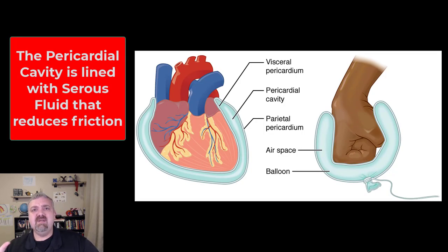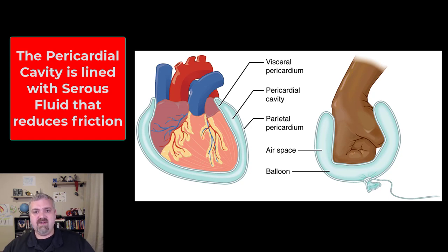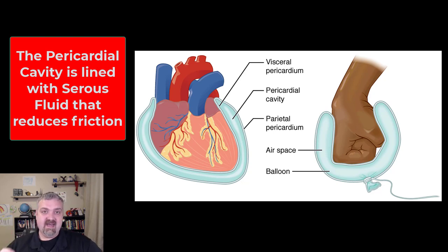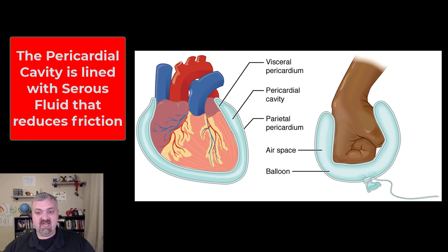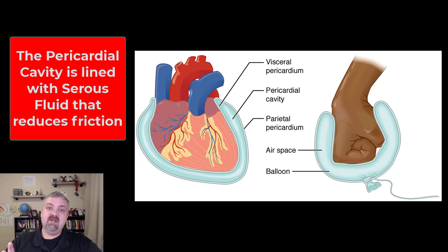Remember that between the visceral and parietal pericardium you're going to have the pericardial cavity. It's not nearly as big as the picture shows — it really barely exists, but just for representation. Inside that cavity is going to be a serous fluid. Serous fluids are very watery; their job is to reduce friction. So every time your heart beats, these two layers slide over each other rather than generating friction, which would be a serious problem. If too much fluid were to get into this cavity, that could make it difficult or impossible for the heart to beat.